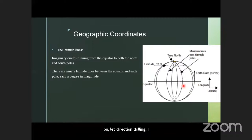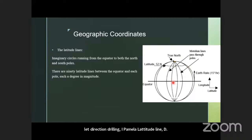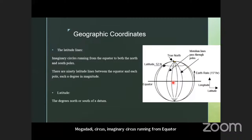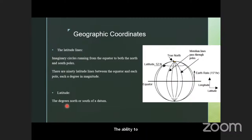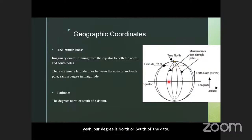Latitude lines are imaginary circles running from the equator to both north and south. Latitude represents the degrees north or south of the equator.